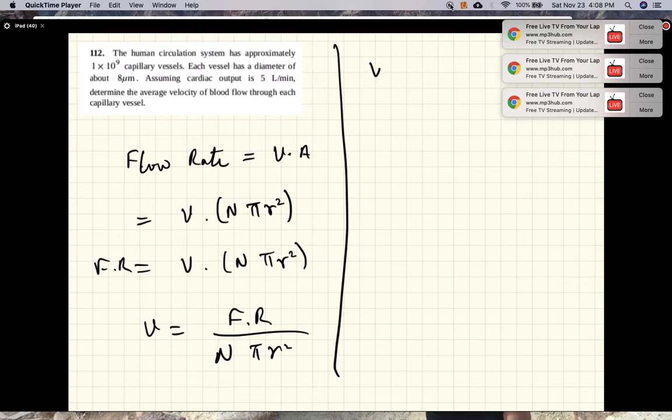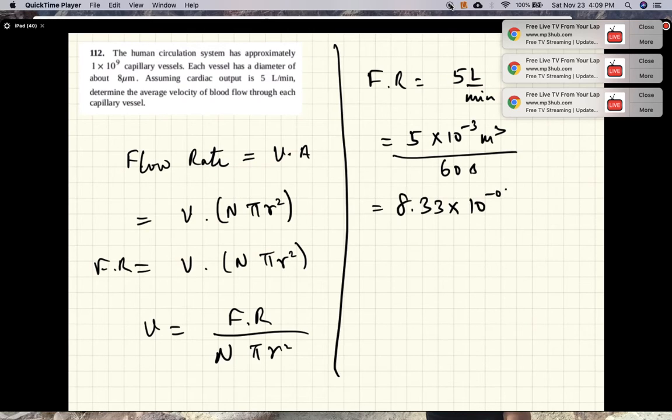Flow rate is 5 liters per minute. Each liter is 10^-3 meter cubed, and a minute is 60 seconds. So flow rate equals 5 times 10^-3 meter cubed over 60 seconds, which equals 8.33 times 10^-5 meter cubed per second. That's the flow rate of blood.